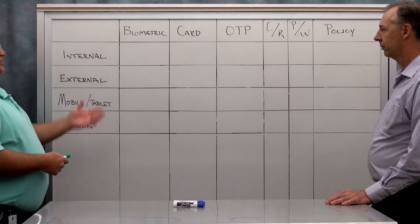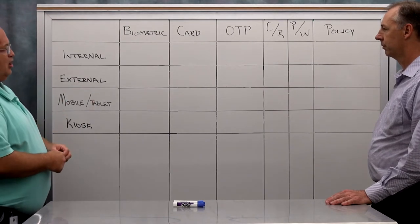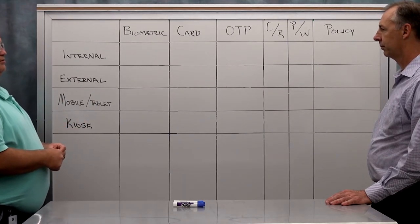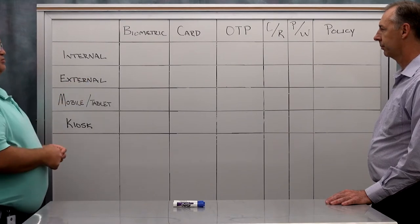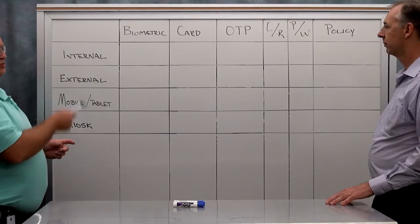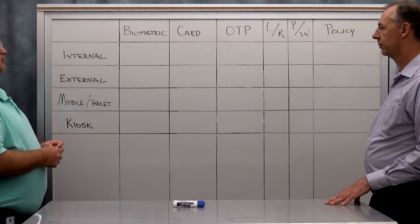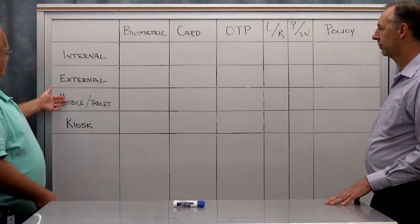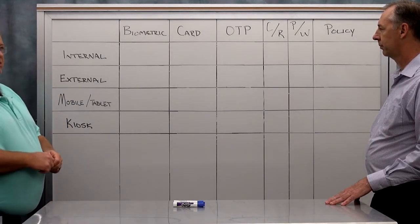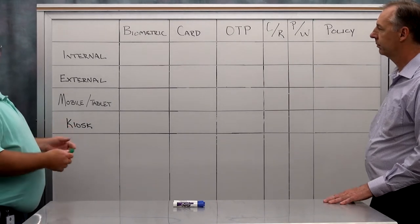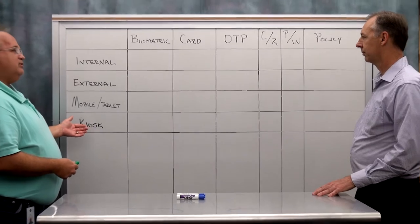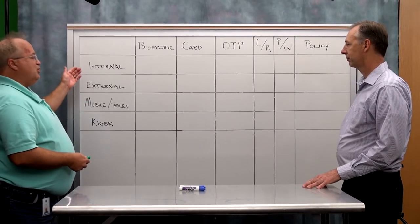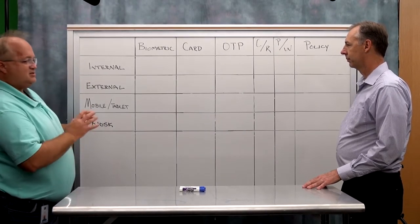Biometrics, cards, one-time passwords, whether it's a hard token or a TOTP soft token, challenge response, and password. We'll talk about the last column, policy, in a minute. And these are typical types of users that a business might have. A business could easily have more than this. Most businesses might even have less than this. But we'll just talk about this setup right now.